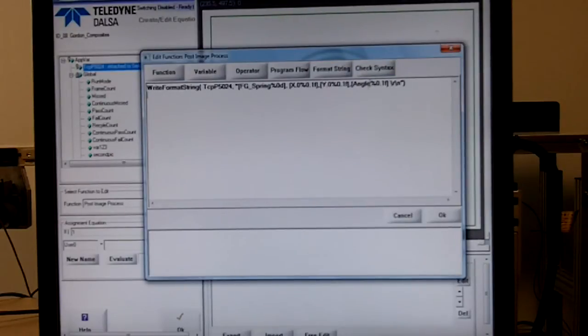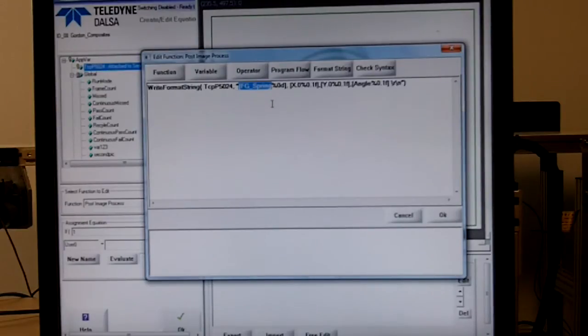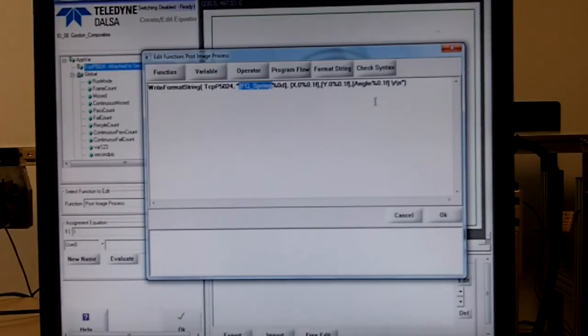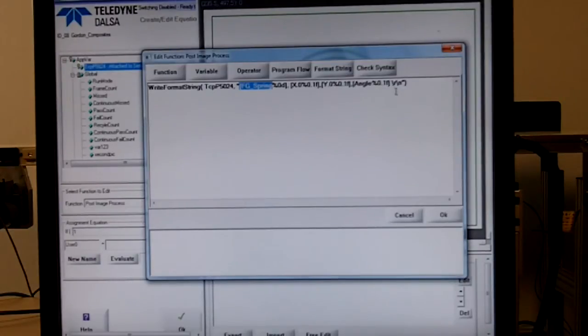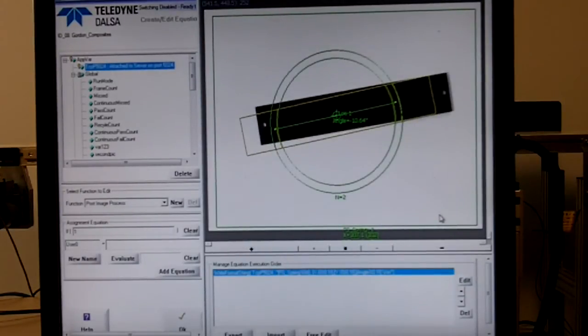Here's the one line of code I had to write. We are going to be using port 5024 and the data that we're sending is the fg spring variable, which again is number of parts within the field of view, the x and y of the centroid, and the angle. And we're going to end it with a carriage return line feed shown here by the backslash r, backslash n. And that's it. That's all we have to do from the camera side. Now let's move over to the robot software.